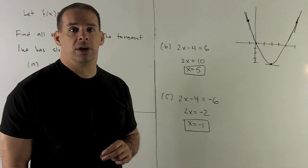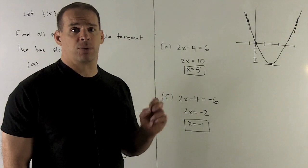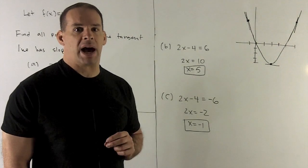How about slope = -6? We're going to solve 2x - 4 = -6, which gives me x = -1.